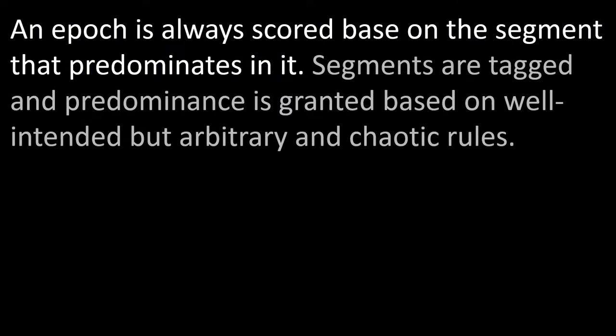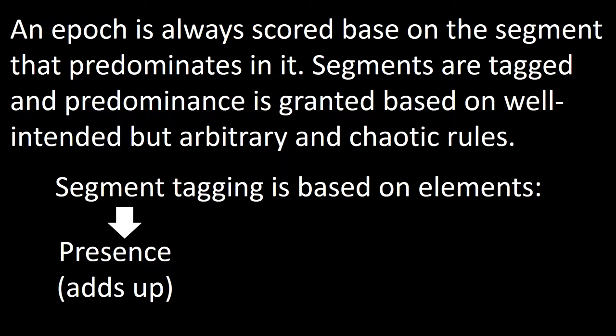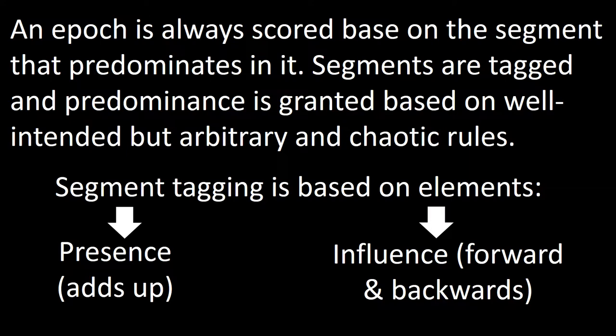Segments are tagged and predominance is granted based on well-intended, arbitrary, and sometimes complex rules. Some elements only tag the epoch they occupy while others project their influence. Most elements such as spindles only influence the record in front of them, but rapid eye movements exert influence both backwards and forward.